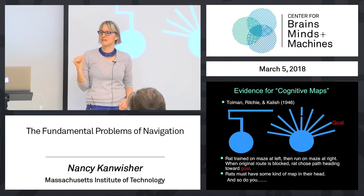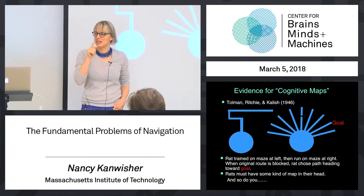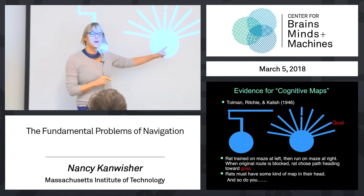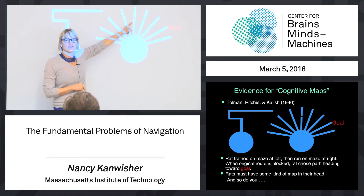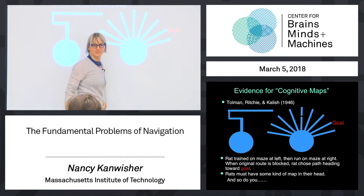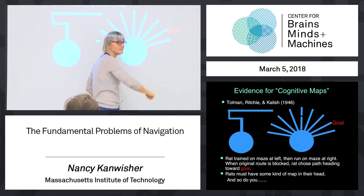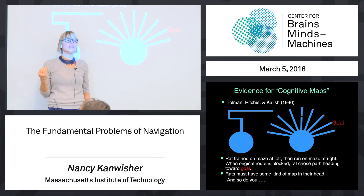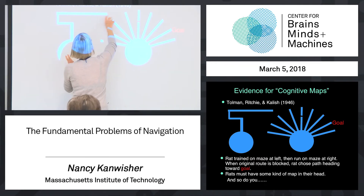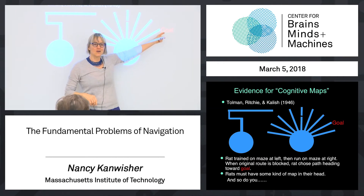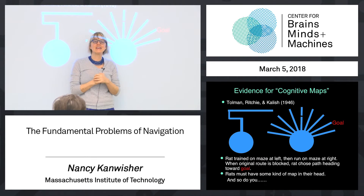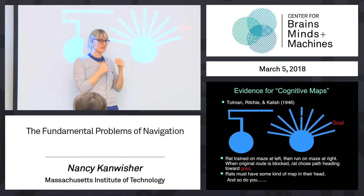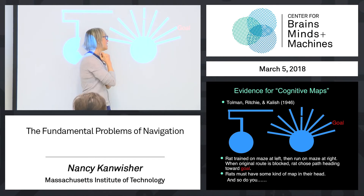But if what the rat had learned was just that sequence of actions, it wouldn't have done what happened next. Tolman took the rat and put it in a new maze with the original route blocked off. The rat goes down, sees it can't do that anymore, comes back out, and goes straight toward the goal. That's revealing: the rat doesn't just have straight, left, right, right. The rat has some kind of mental representation of the spatial layout of its environment — some kind of vector direction toward that goal. It knows where the goal is. That was a key chink in the armor of behaviorism, leading people to say there probably is some kind of mental representation, even in a rat. Next lecture we'll talk about the neurons in the rat's brain that enable this.